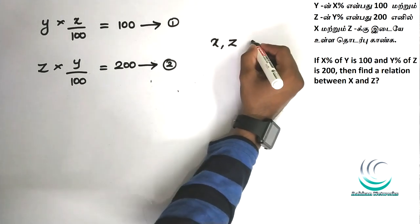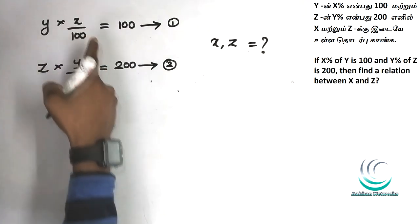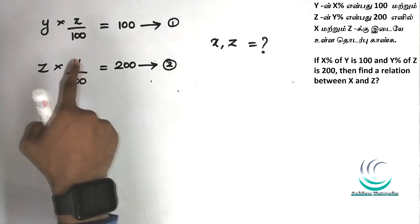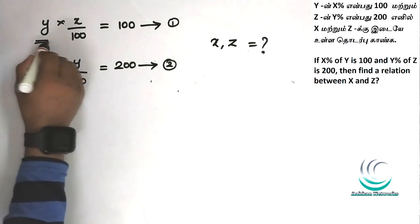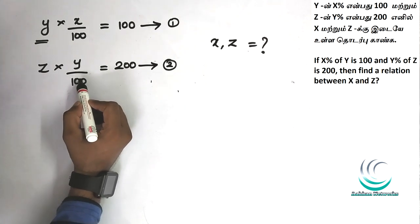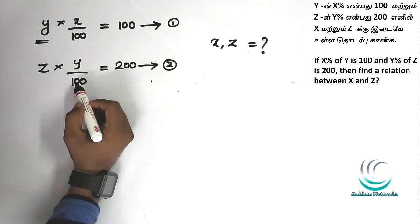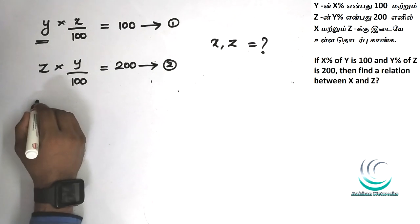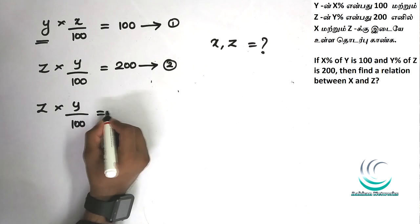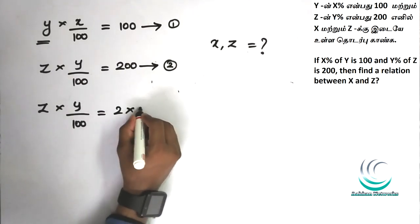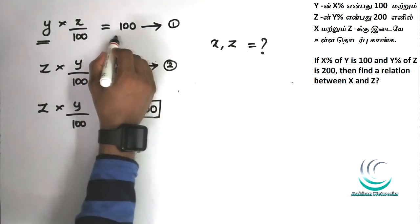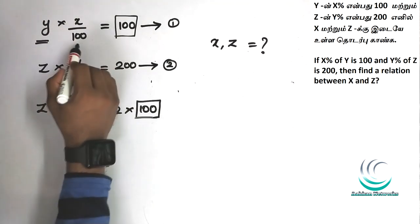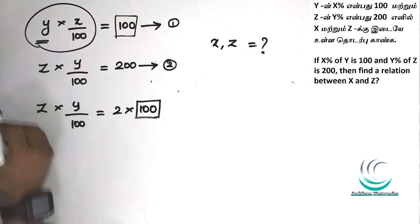Then x is equal to equation 1 and equation 2. The two equations both have y, so we keep combining. If you want to join the value, you can apply the two equations. Now, if you want to convert this equation: Z into y by 100 is equal to 200. You can write 200 as 2 into 100. So if you want to write equation number 1, the equation number 1 is y into x by 100, equal to 100.